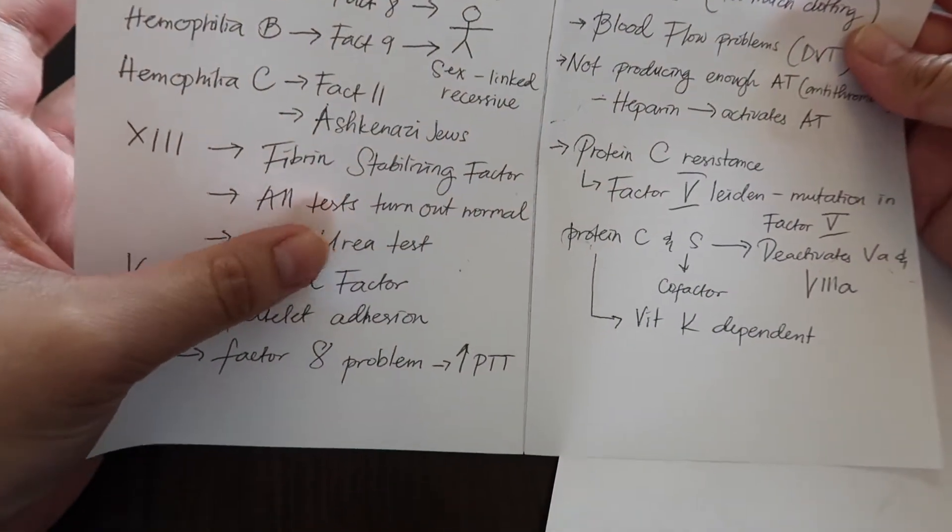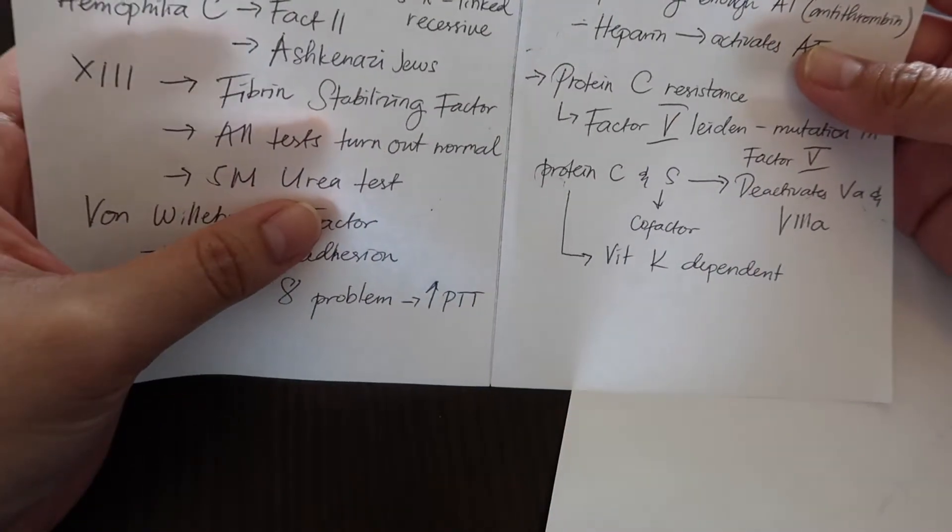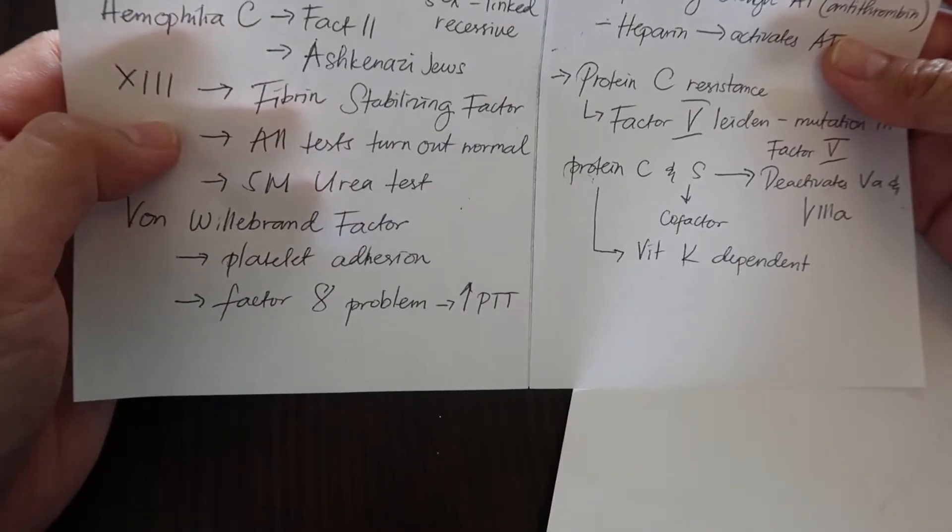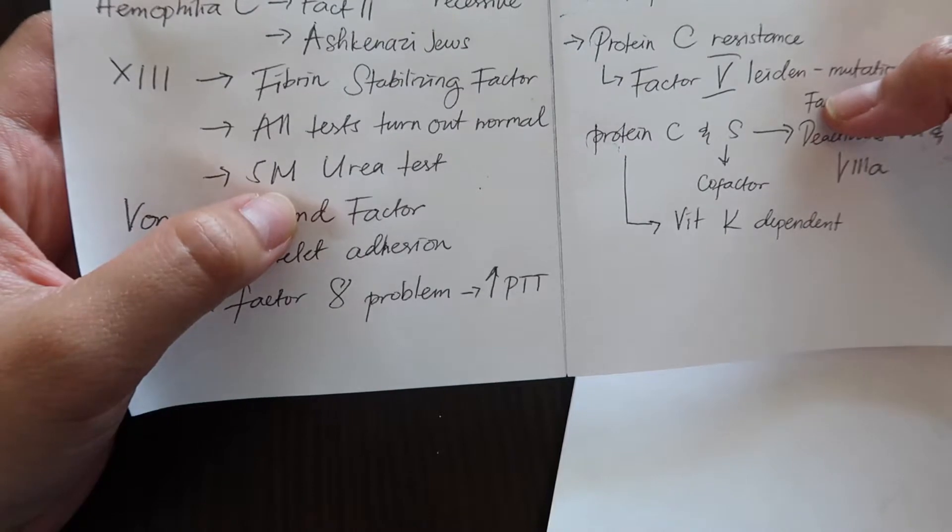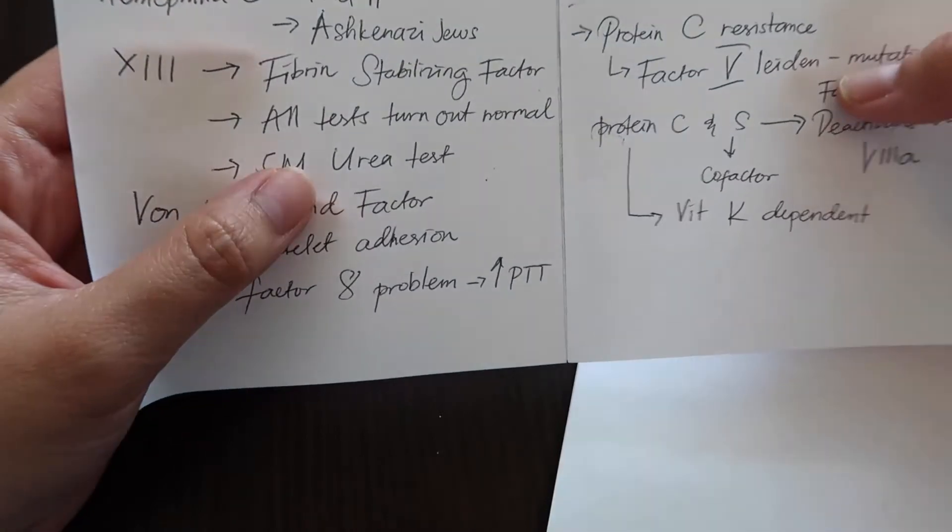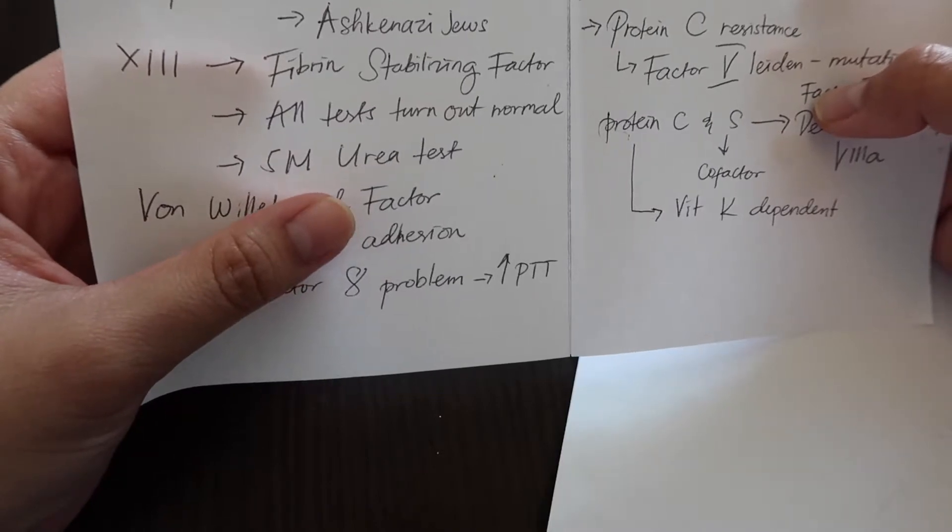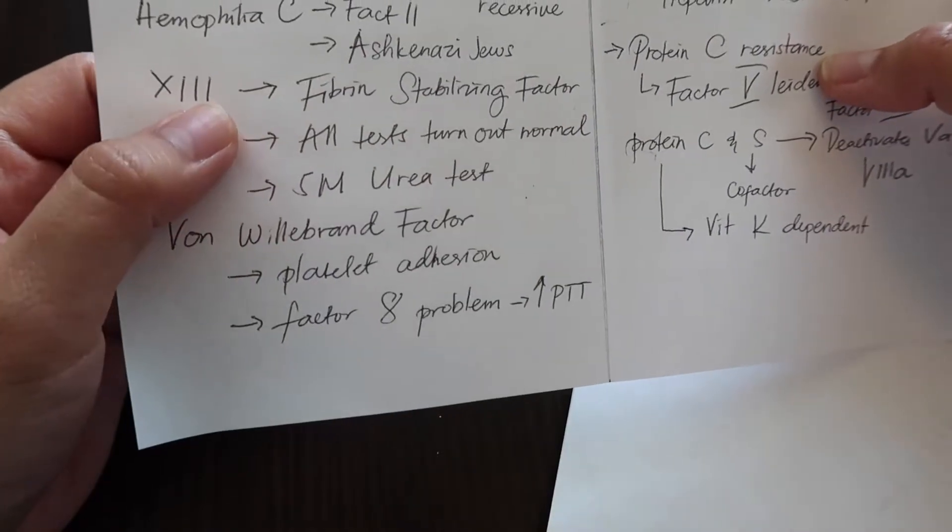The only test for factor 13 is the 5M urea test, and remember this because it's an odd one. If they say PT normal, PTT normal, bleeding time is normal, what is wrong? It's most likely factor 13, and the test used for it is the 5M urea test. They say everything's normal but the 5M urea test is not, it's abnormal, so that confirms it's factor 13.